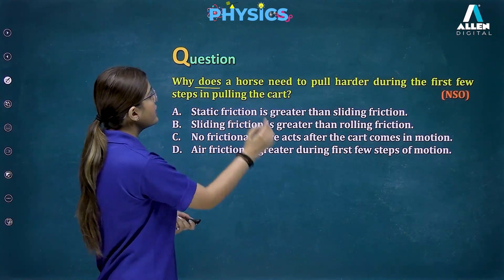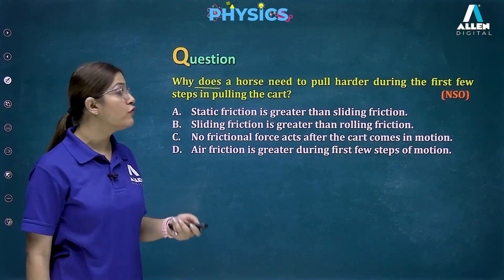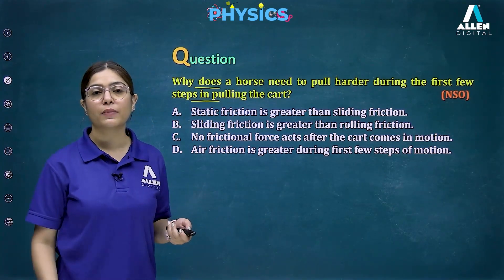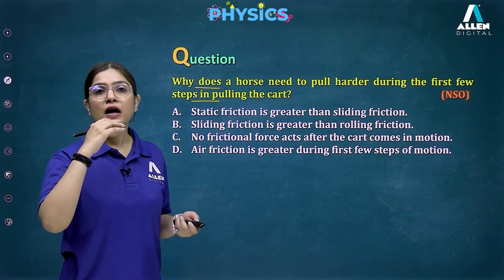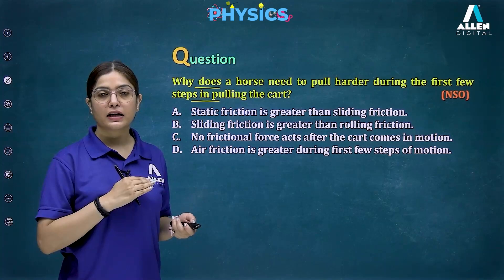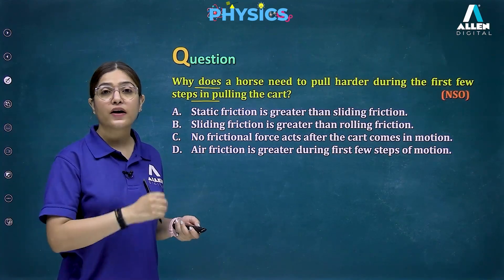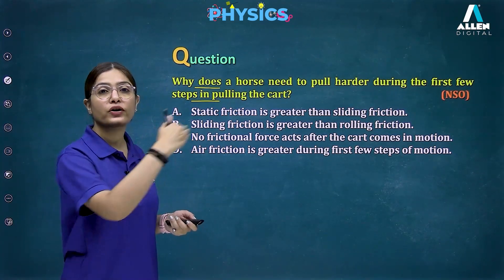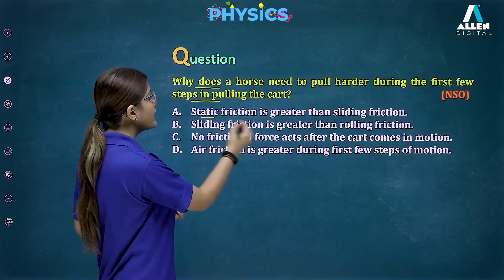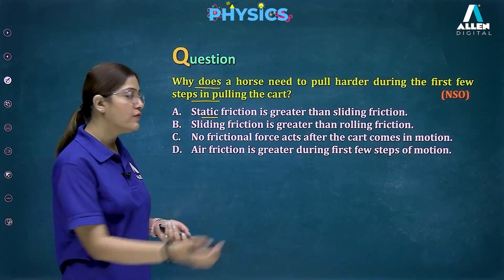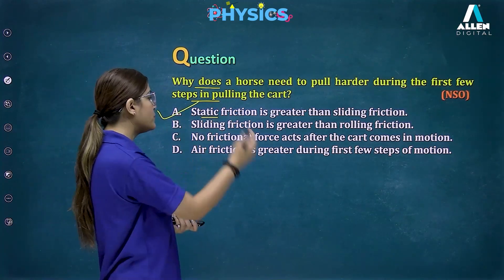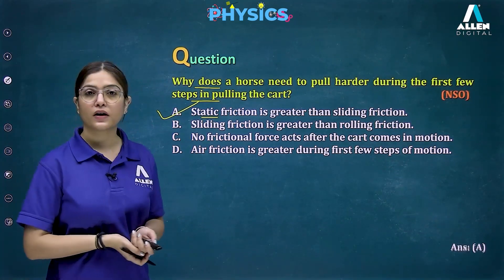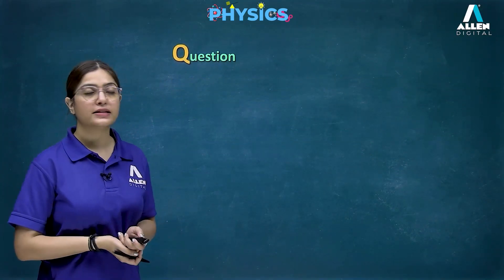Next question: why does a horse need to pull harder during the first few steps when pulling a cart? Because initially static friction is acting, which is greater than sliding friction. The horse must overcome static friction first to get the cart moving. So the correct answer is option A: static friction is greater than sliding friction.